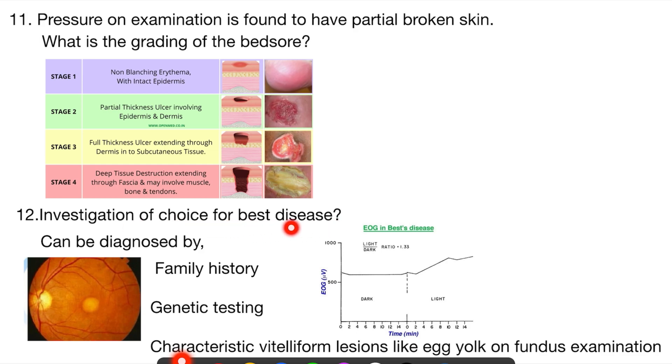Coming to investigation of choice for Best disease, this is something related to ophthalmology. There are so many questions in ophthalmology in INESET exam. Here you can see an electro-oculography which is given in Best disease. We know that light versus dark ratio is 1.33, which is increased in Best disease. The characteristic fundus examination shows this egg yolk appearance in fundus, by which we can diagnose Best disease.